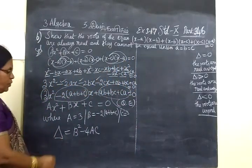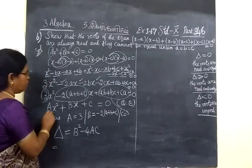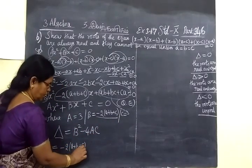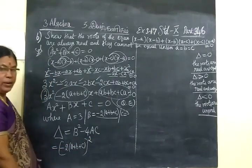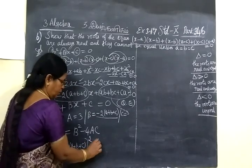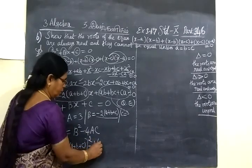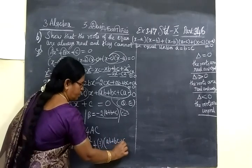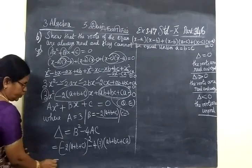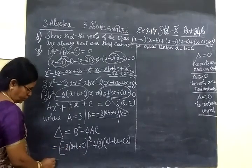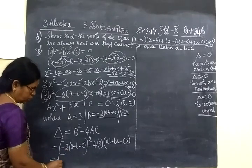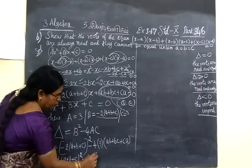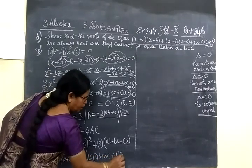Now taking the discriminant b² minus 4ac: b is the whole term minus 2(a plus b plus c), so b² equals [minus 2(a plus b plus c)] whole square. Then minus 4 into A, which is 3, into C which is ab plus bc plus ca.